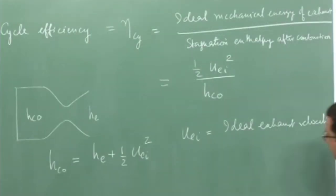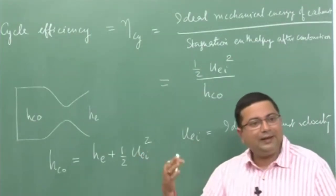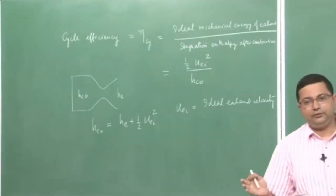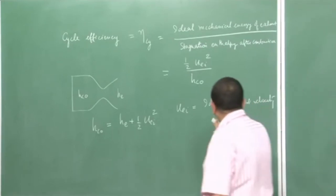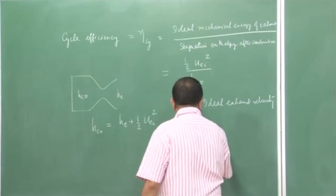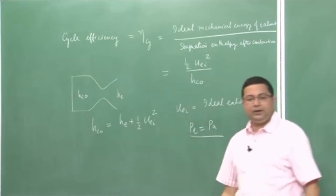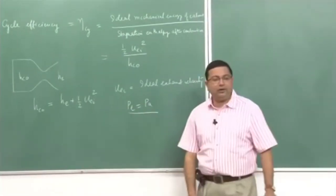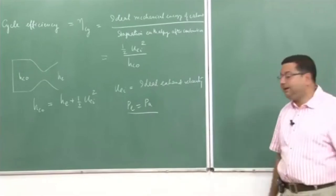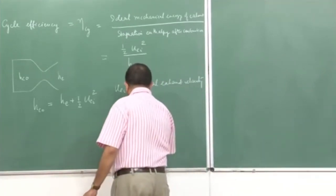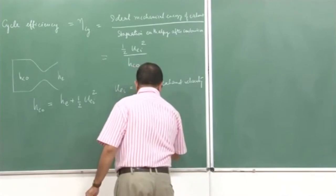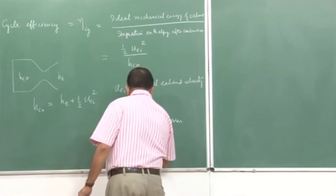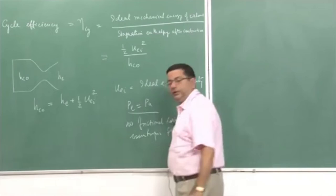Let us recapitulate what we have defined as the ideal rocket. We said that for the ideal rocket there are no pressure forces, so the expansion is ideal: P_E = P_A. The exit pressure at the nozzle exit equals the ambient pressure. At the same time, there are no frictional losses and the flow in the nozzle is isentropic.